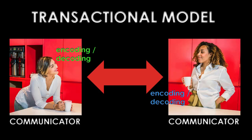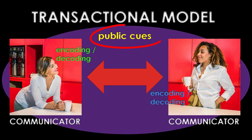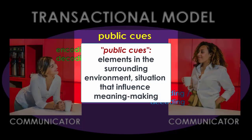According to Barnlund's model, there are three sets of cues that are really important to help us understand what's going on when we're doing this encoding and decoding. The first is what he referred to as public cues. These are the kinds of elements in the surrounding context — just like in the interactional model, we can think about things such as the surrounding physical environment, the kinds of things going on in the surrounding situation or the occasion, and why it is that we came together to converse in the first place.